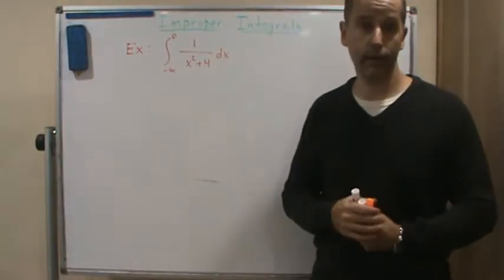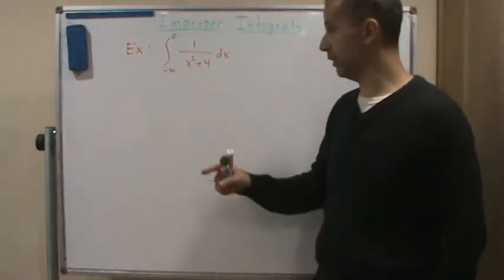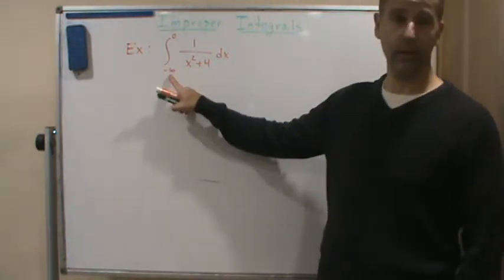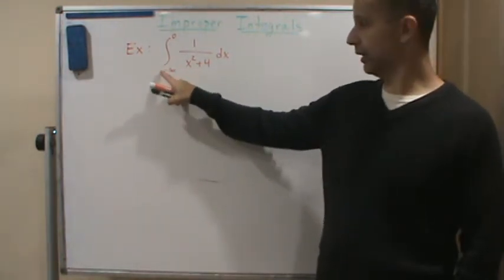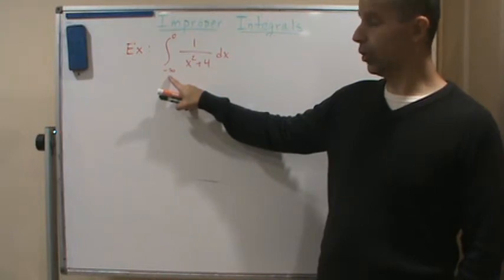Okay, welcome back. Today we're going to do another example, and this time we're going to talk about how to do one where it goes off to negative infinity.